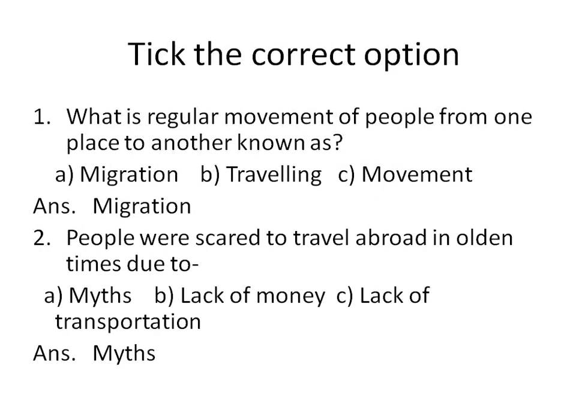Number 1 is: what is regular movement of people from one place to another known as? Options are migration, traveling, and movement. The correct answer is migration.